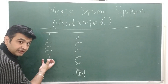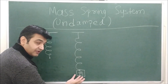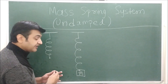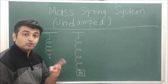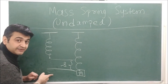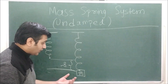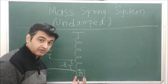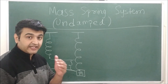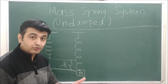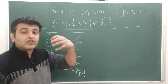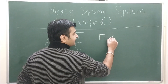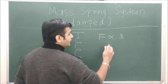When you attach the mass, it starts coming down, and after a moment the gravitational force equals the restoring force. This position is called the equilibrium position. Let's call this displacement s. At the equilibrium position, the gravitational force acting downwards is mg, and by Hooke's law the restoring force is proportional to displacement.